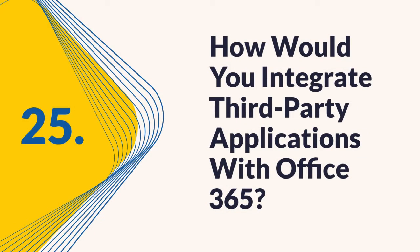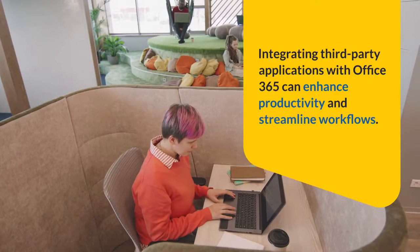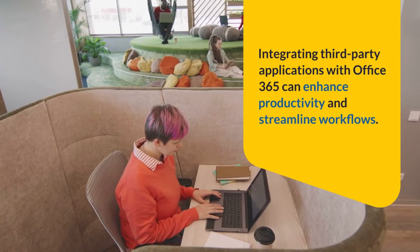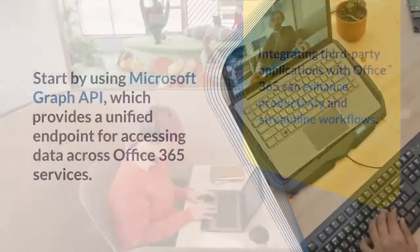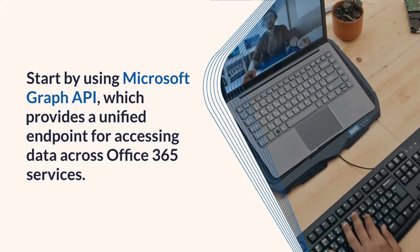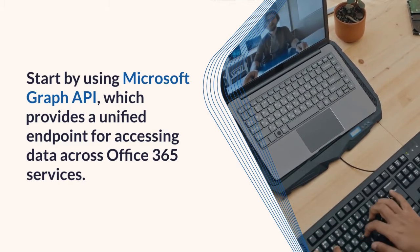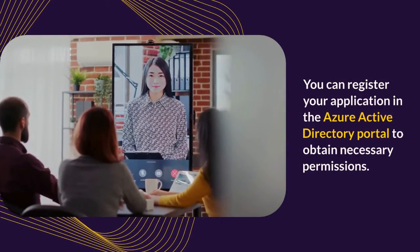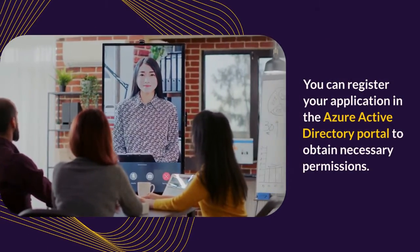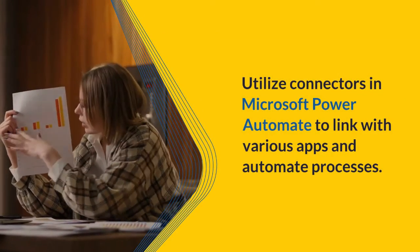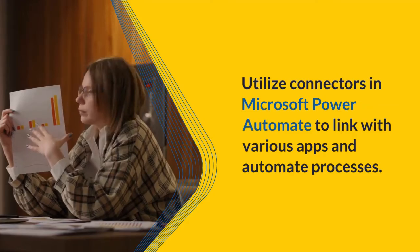How would you integrate third-party applications with Office 365? Integrating third-party applications with Office 365 can enhance productivity and streamline workflows. Start by using Microsoft Graph API, which provides a unified endpoint for accessing data across Office 365 services. You can register your application in the Azure Active Directory portal to obtain necessary permissions. Utilize connectors in Microsoft Power Automate to link with various apps and automate processes.